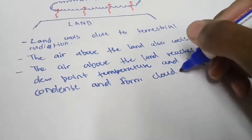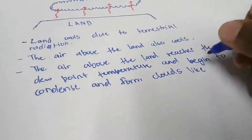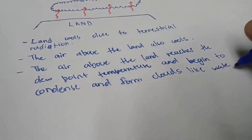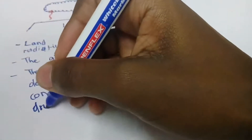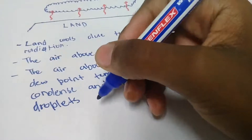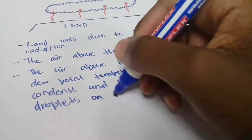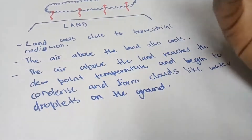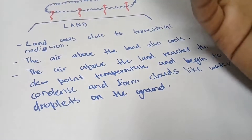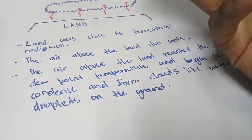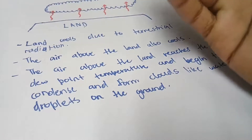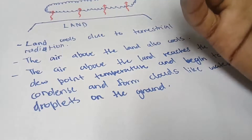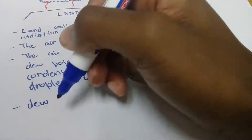Cloud-like water droplets form on the ground. These water droplets are much similar to clouds, but it's the reverse — normally we experience clouds in the sky, but now clouds form on the ground.